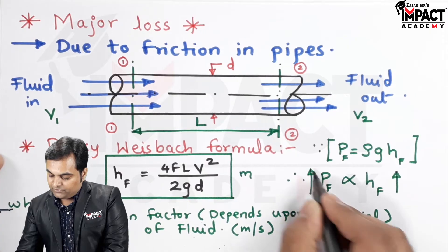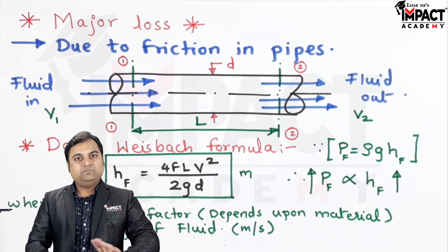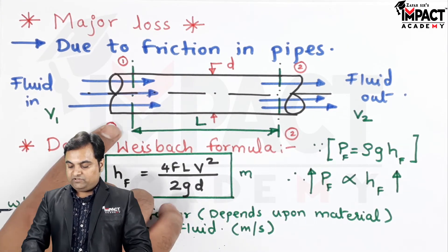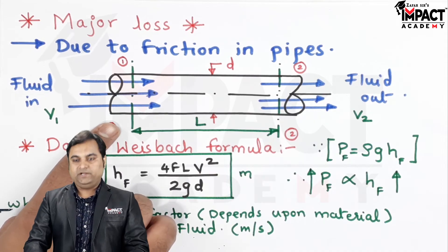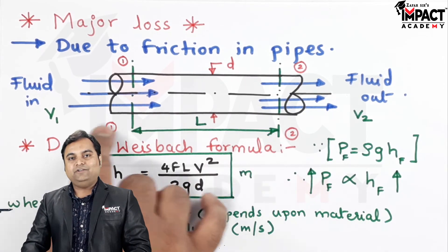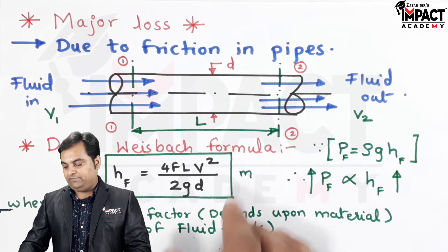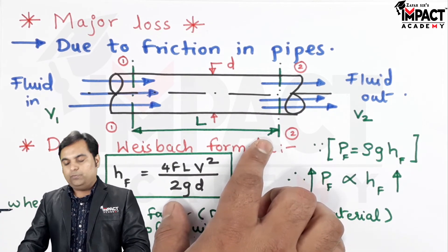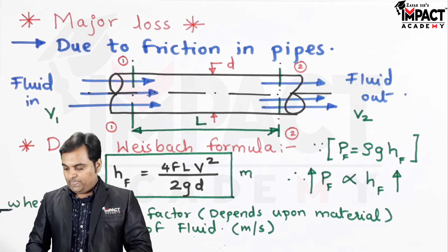Like I am just taking a rough example, if the pressure intensity at point 1 is 5 bar, then at 2 the value would be lesser than 5 bar. It can be about 3 bar, 2 bar or any given value.